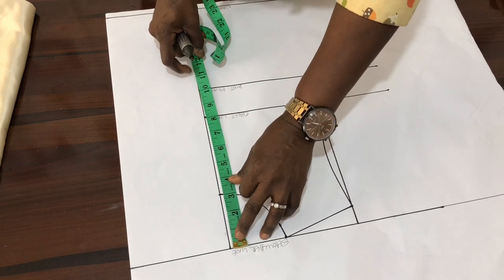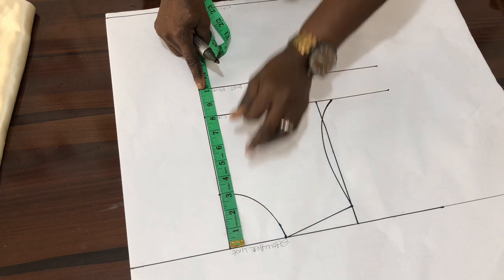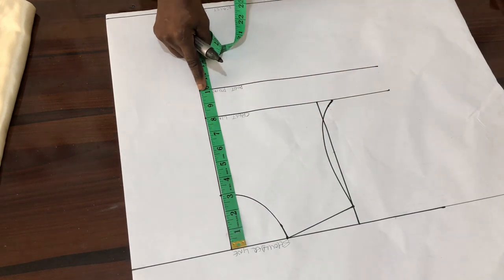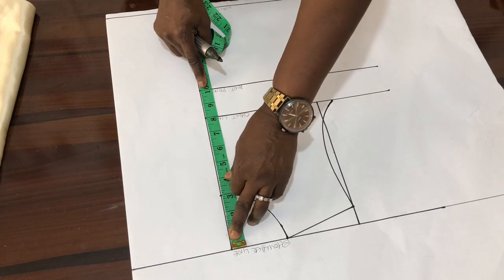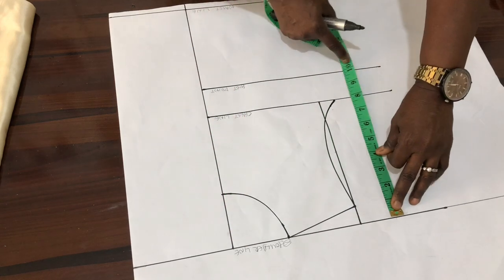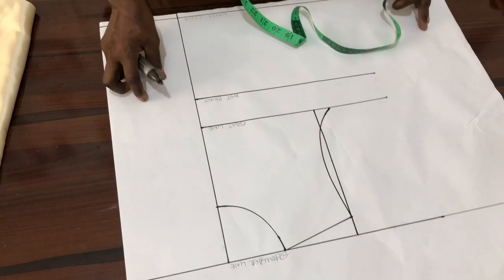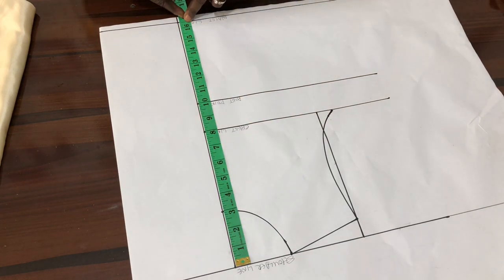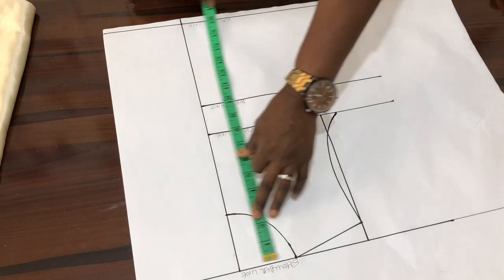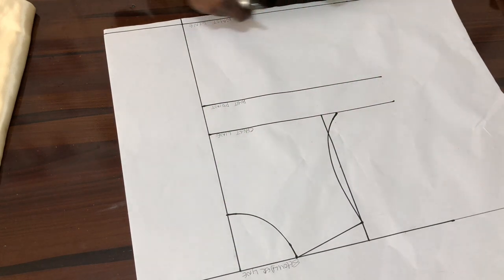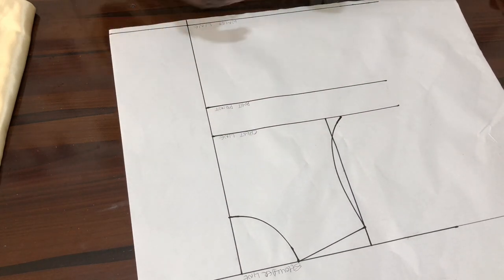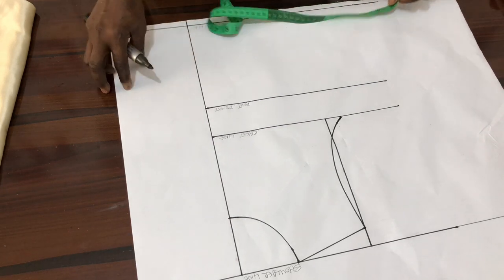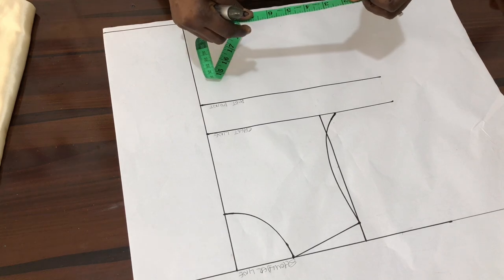Then, we measure our bust points, which is 10 inches. We are going to use the bust points to create our dart. Then, we have a waistline of 16.5. Measure it and rule it. So, the remaining half inch is a joining allowance if you are joining this to the down part.